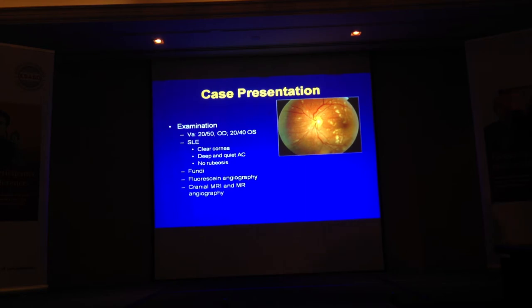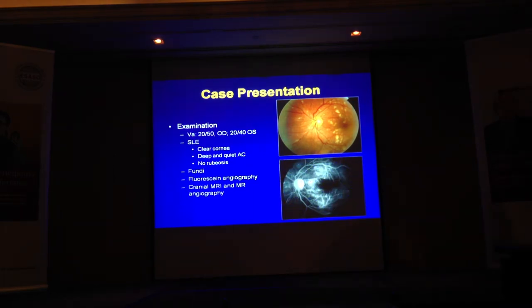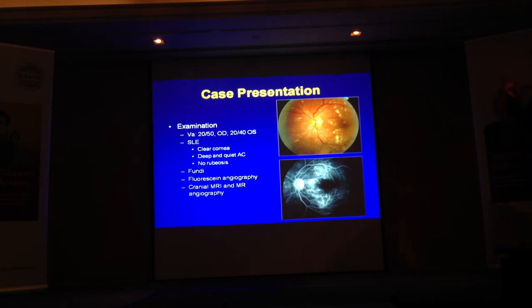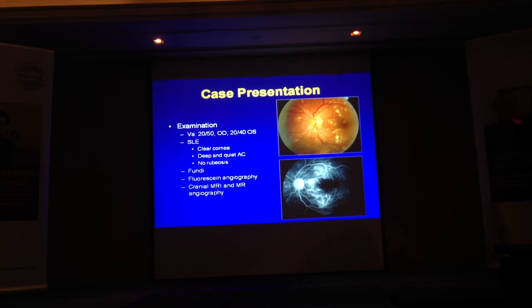On fluorescein angiography, what do you see? Leakage — from the vein, right? This is a small vessel, but you can really see the vessel leaking. Nowadays, many times we use wide-angle photography and fluorescein. You can see the peripheral vessels, and you can see leakage out there. When we see leakage in the posterior pole like this, that is an important point. So we see some leakage here.